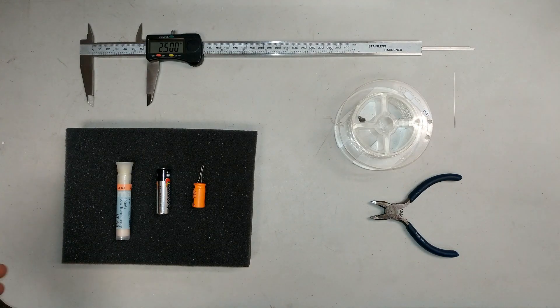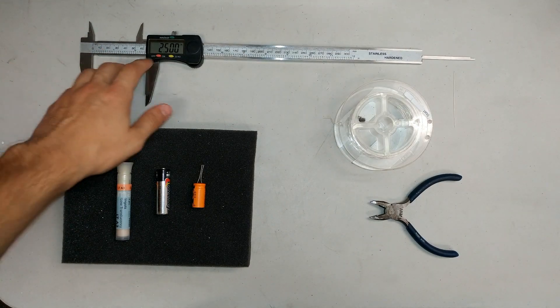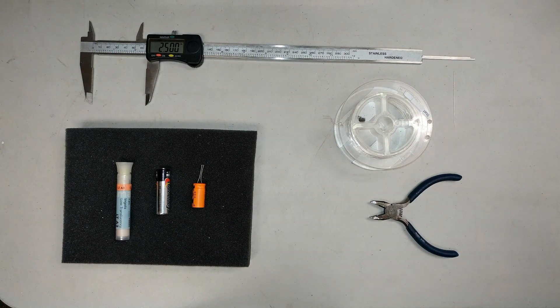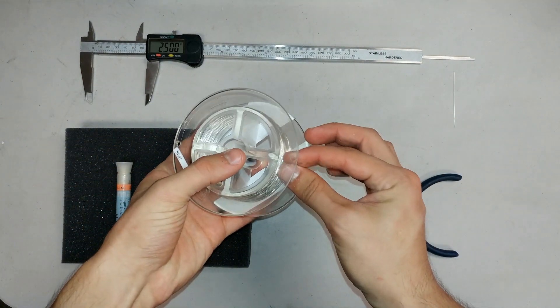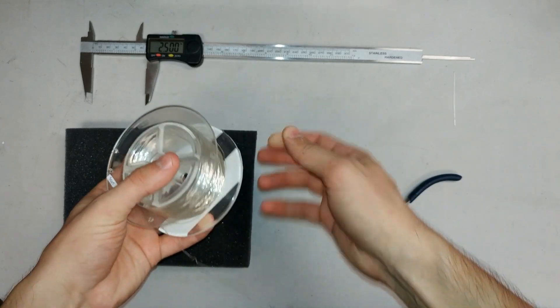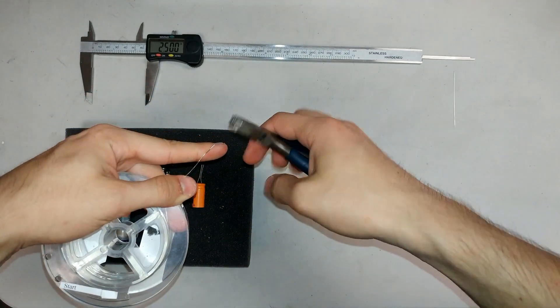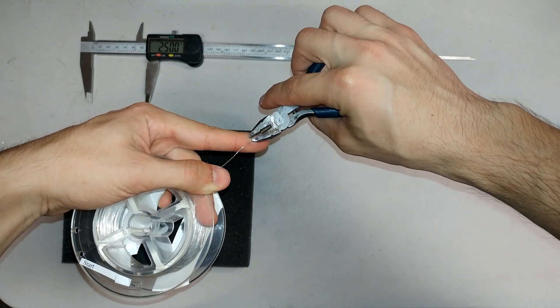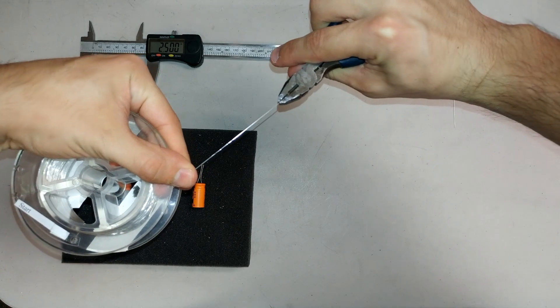The first thing you are going to want to do is take your micrometers and set it to two and a half inches. Once you have it set, go ahead and take your silver wire as well as your pair of pliers. You are going to move the silver wire from how it is locked up and use one hand to hold one end and the other hand to use the pair of pliers, pulling on the silver wire to straighten it out.